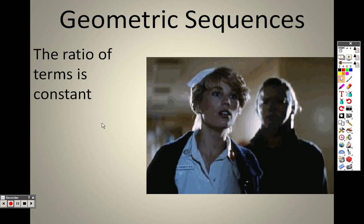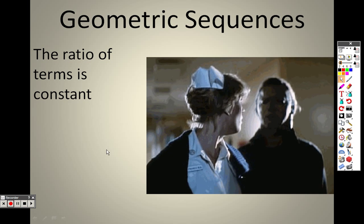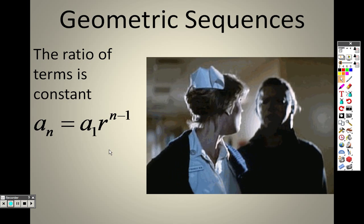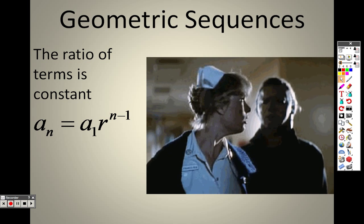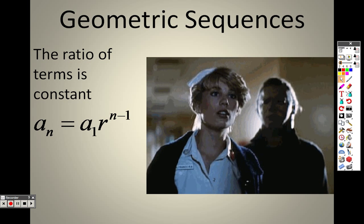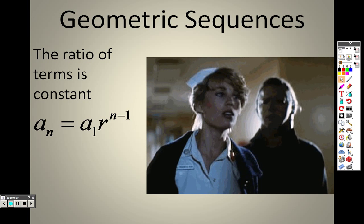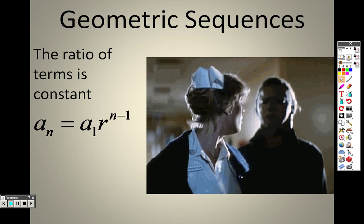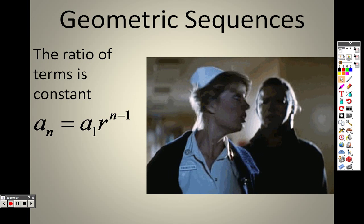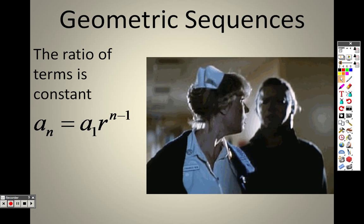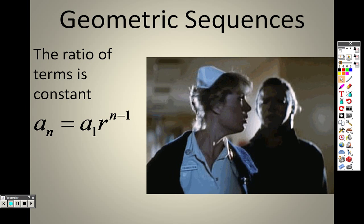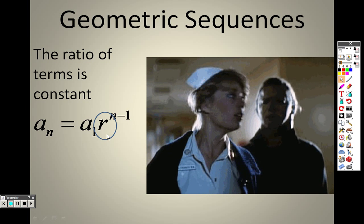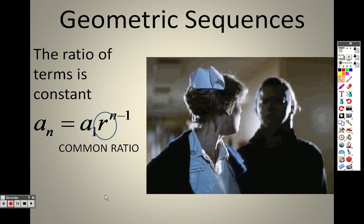Geometric sequences are based on the ratio of the terms, and that ratio needs to be constant. This is a new formula for you — the formula we will be using for geometric sequences. A sub 1 means the first term, r stands for the ratio of terms, n stands for the number of terms in the sequence, and a sub n stands for the last term. R is now the common ratio we're talking about in the problem.